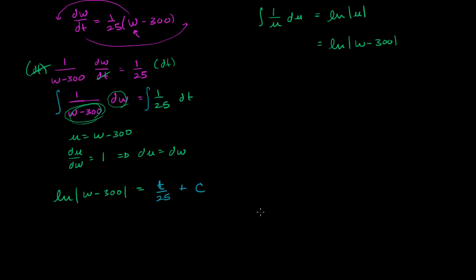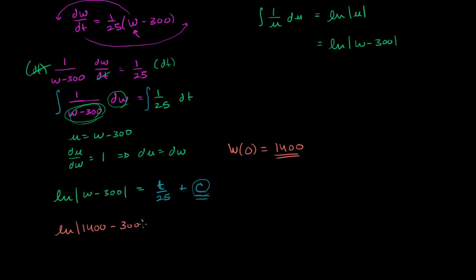We want to solve the particular solution. We have this constant C, and we haven't yet written w as an explicit function of t. First, let's solve for C. We're told that w(0) is equal to 1,400 tons. So we know that when t equals 0, w equals 1,400: the natural log of the absolute value of 1,400 minus 300 is equal to 0 plus C. That gives us the natural log of the absolute value of 1,100 equals C. Since 1,100 is positive, C equals the natural log of 1,100.